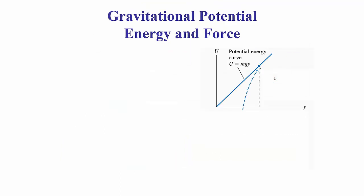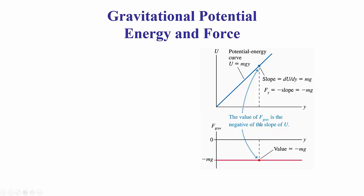Let's look at an example we already know. For gravitational force near the surface of the Earth where g is constant, the force of gravity is mg downward. Gravitational potential energy near the surface of the Earth is mgh or mgy, where y is our position above the ground. So this is a graph of potential energy as a function of position: u equals mgy. As y gets bigger, the potential energy gets bigger. The slope — the derivative of u with respect to y — would be mg, but the force is the negative of that slope, so the force is negative mg, pointing in the negative y direction.